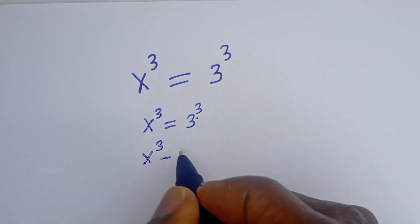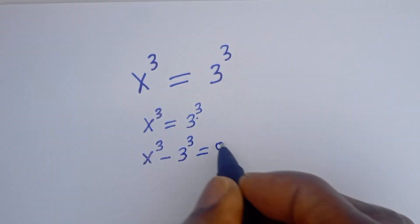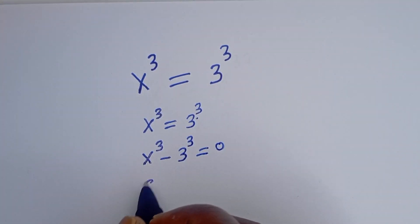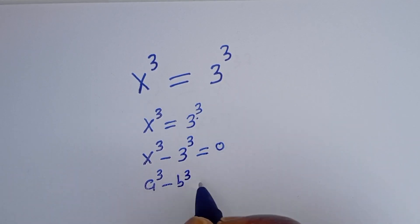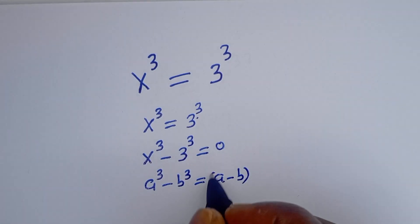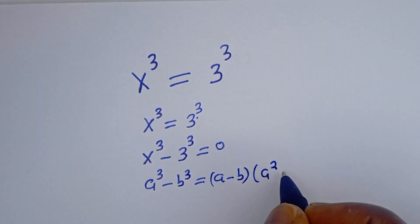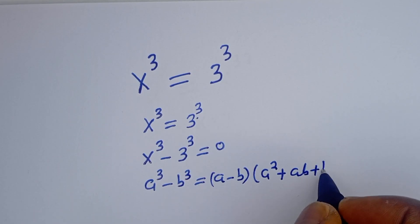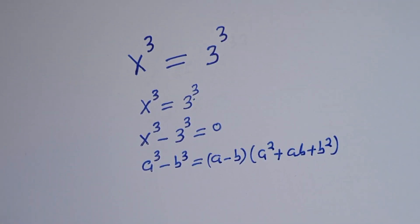...minus 3 cubed is equal to zero. Now take note of this rule: if you have a³ minus b³, this is equal to (a minus b)(a² plus ab plus b²).